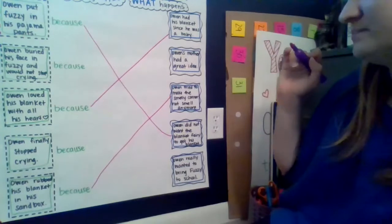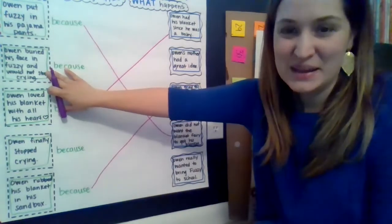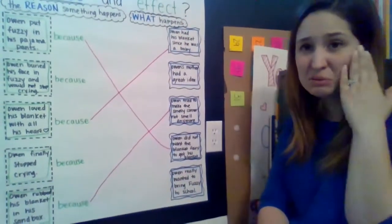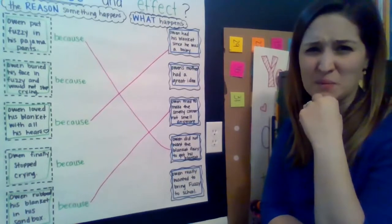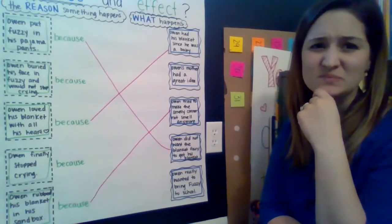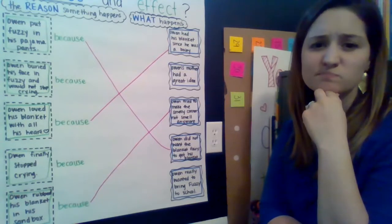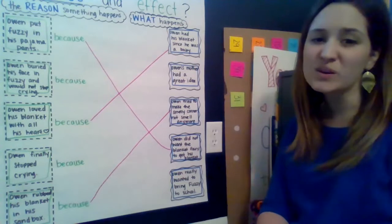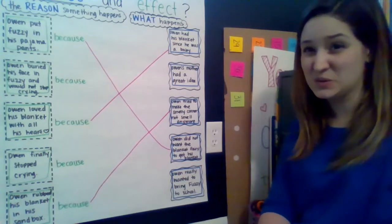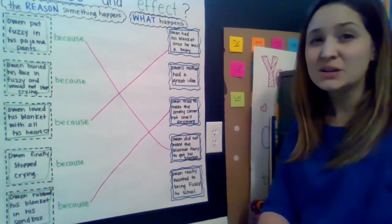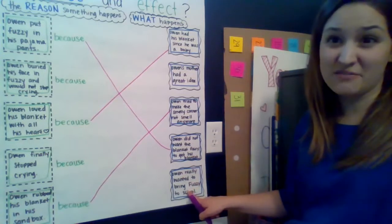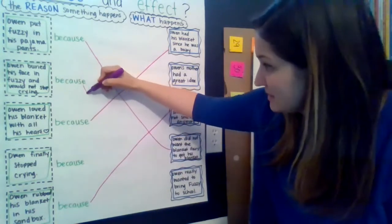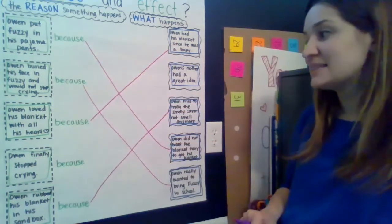Let's go on to this one. It says: Owen buried his face in fuzzy and would not stop crying. Why was Owen crying so hard? What was the cause of that? Owen really, really wanted to bring his blanket with him to school and his mom and dad told him that he couldn't, so that made him really sad and he was crying. Our cause is Owen really wanted to bring fuzzy to school. The effect is that he buried his face in fuzzy and couldn't stop crying.